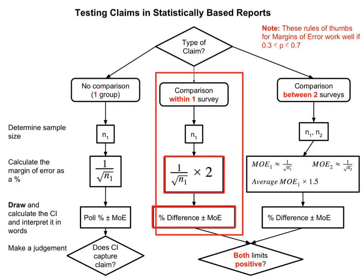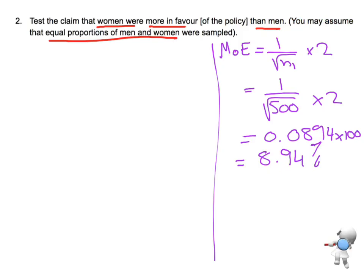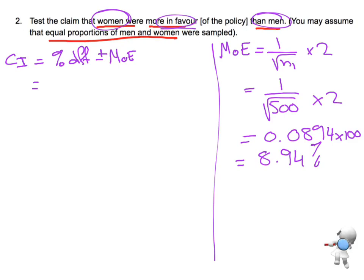My formula for my confidence interval is that percentage difference plus or minus the margin of error. So I'm going to write that down: it's the percentage difference plus or minus the margin of error. So I need to find the two percentages — the percentage of women and the percentage of men that are in favour of the policy.